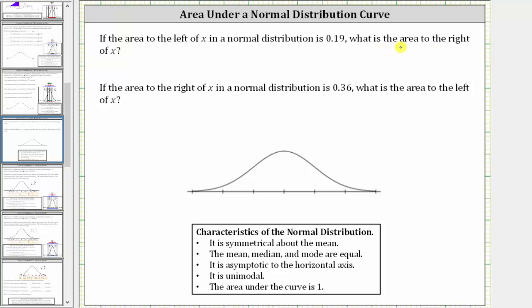Let's begin by reviewing some of the characteristics of a normal distribution. First, it is symmetrical about the mean, where the mean, median, and mode are all equal and located at the center of the distribution, which is here.